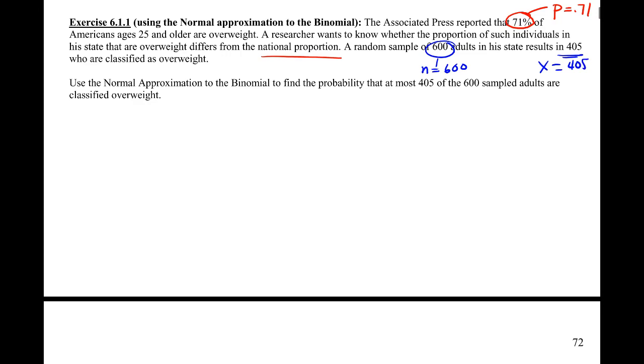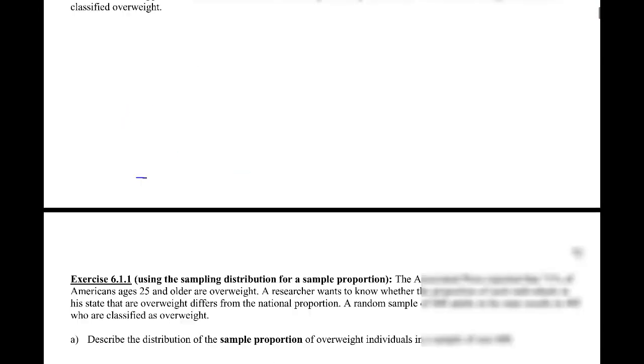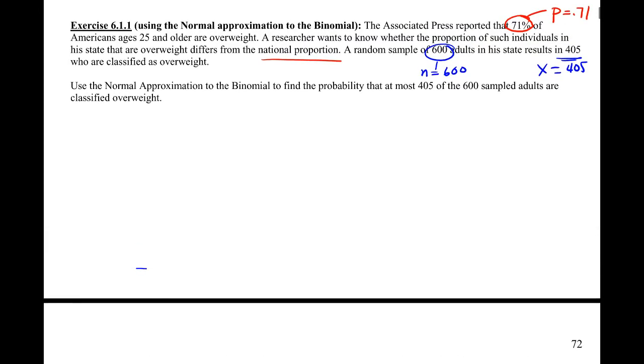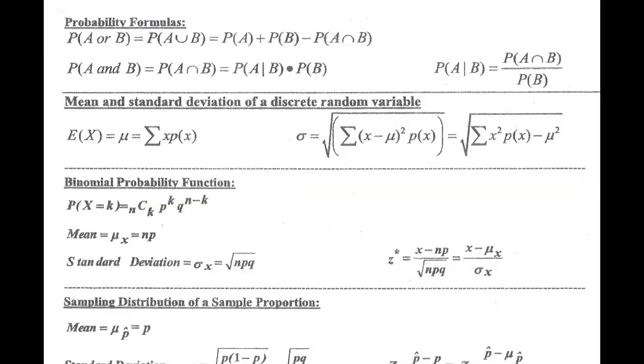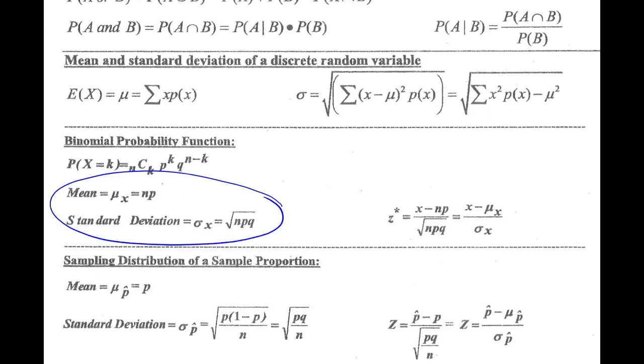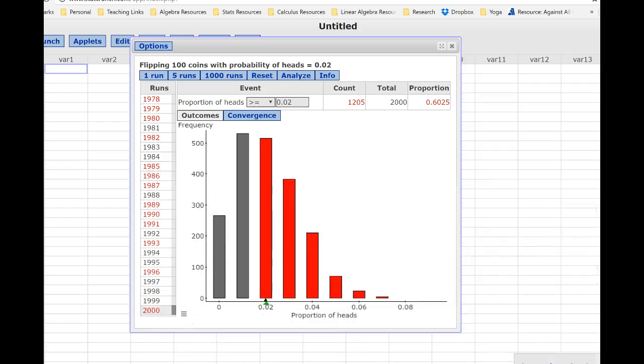Our first question here says, let's use the normal approximation to the binomial to find the probability that at most 405 of the 600 are classified overweight. If we're going to use the normal approximation to the binomial, we probably want to go to our formula sheet and remind ourselves that for the binomial, the normal approximation has a mean of NP and a standard deviation of the square root of NPQ. I'd put down here, first thing I'd do is NP, that's my mean.